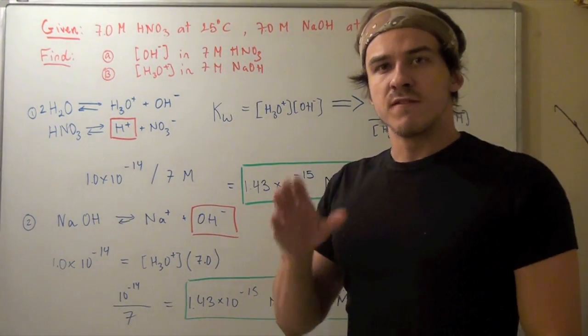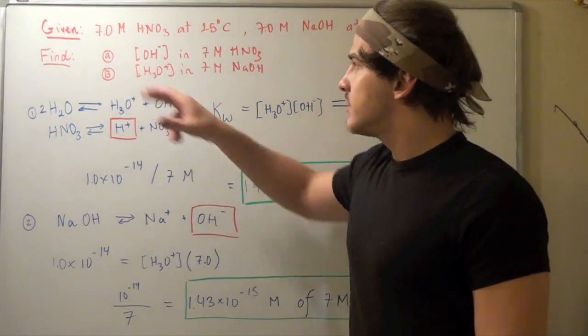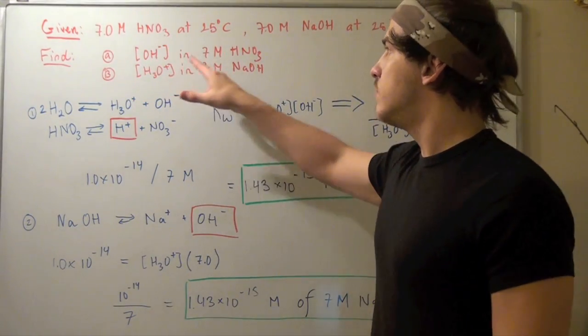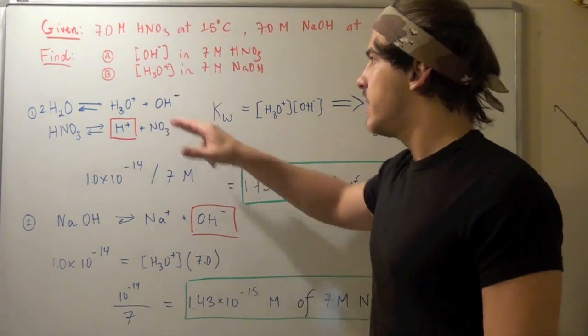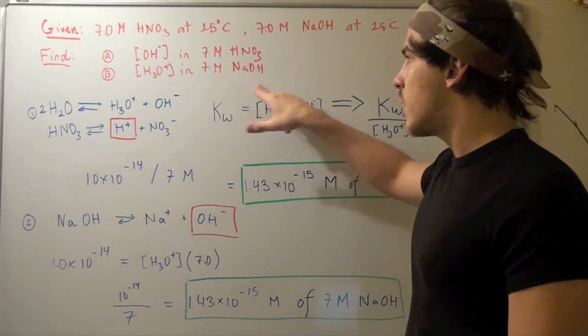You want to find two things. First, we want to find the concentration of hydroxide in our 7 molar nitric acid solution. Second, we want to find the concentration of hydronium in our 7 molar sodium hydroxide solution.